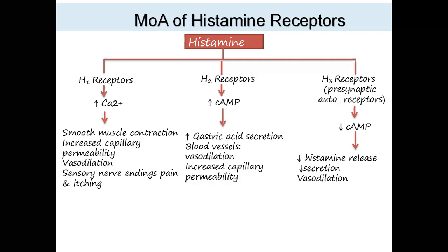H2 receptor: when a cyclic AMP reaction starts, gastric acid secretion increases, blood vessels dilate, and capillary permeability increases. So gastric acid secretion increase is because of H2 receptors — histamine autocoids are released more and particularly H2. H3 receptor is a presynaptic autoreceptor where cyclic AMP decreases, which means decrease in histamine release, decrease in secretion, and vasodilation decrease.